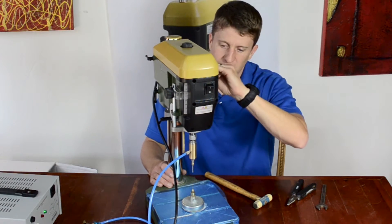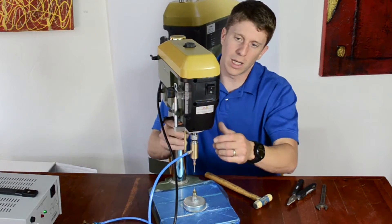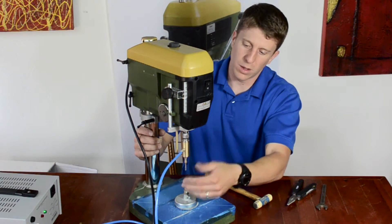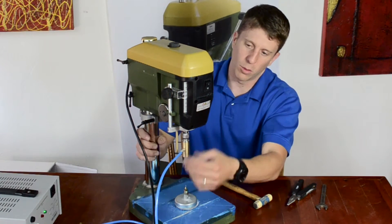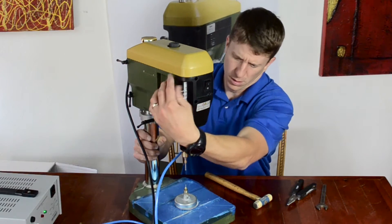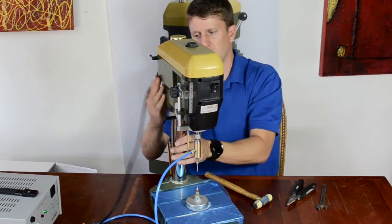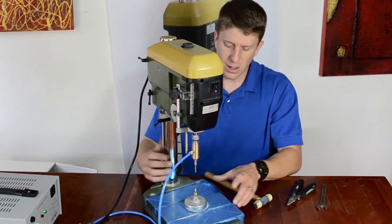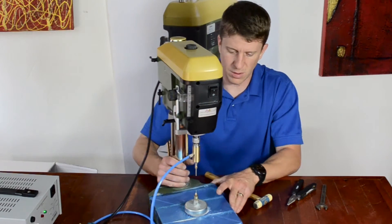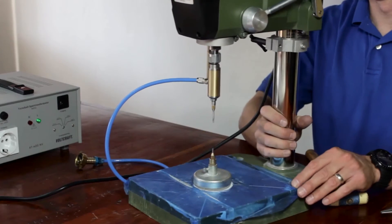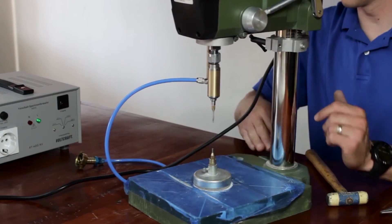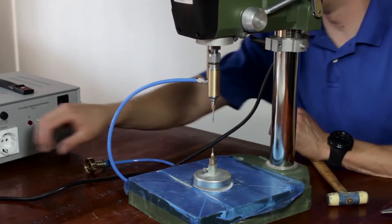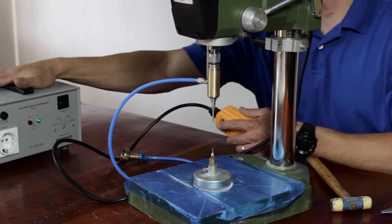So again, there's a couple of different ways you can adjust this. You can lower it and stop the travel of your drill bit with the drill stop. You can use the hand bolts. It takes a little bit to get used to, but you know, it won't take that long.